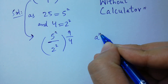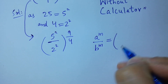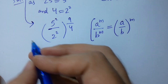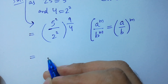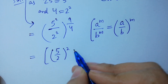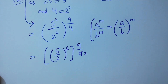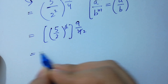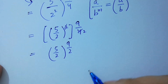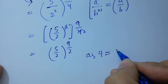Using the rule: a to the power m over b to the power m equals a over b to the whole power m. So we have 5 over 2 squared to the whole power 9 over 4, and combining the exponents gives us 5 over 2 to the whole power 9 over 2, since 9 equals 8 plus 1.